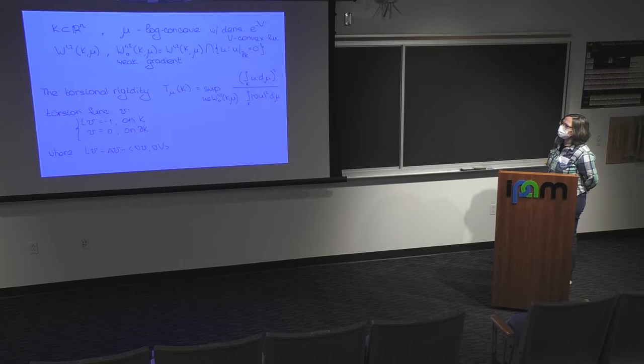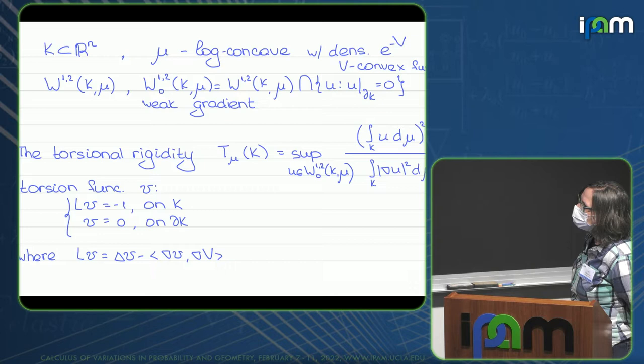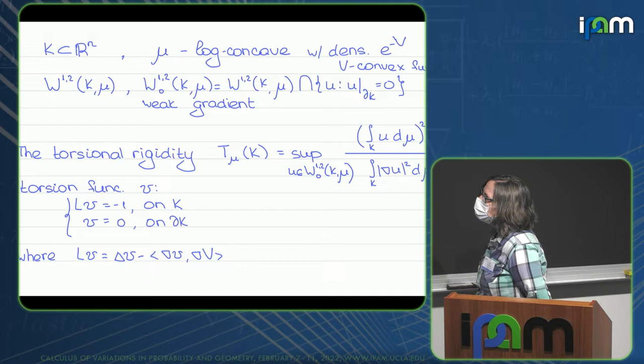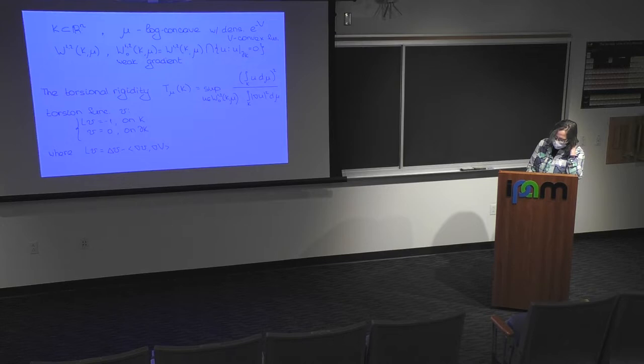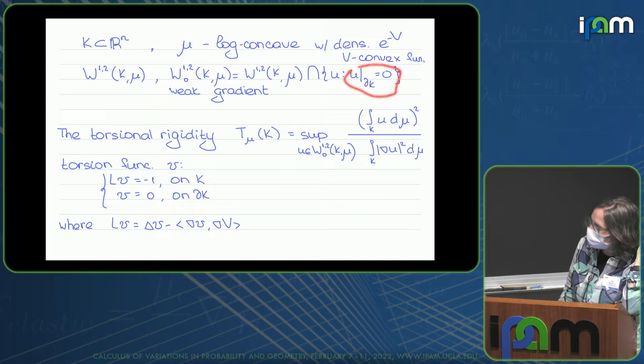Let's make a fast catch-up on what happens here. So if you have a convex domain K in R^n space, and we consider a log-concave measure mu with density e to minus v, where v is a convex function. We will also consider the Sobolev space W^{1,2}, defined as the space of all functions U such that U vanishes on the boundary of K. When we speak about gradient, we mean the gradient of the function.